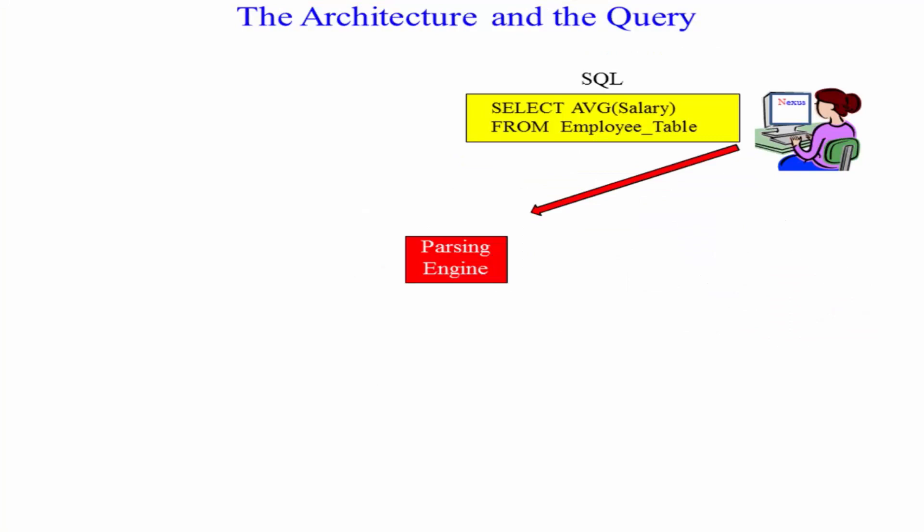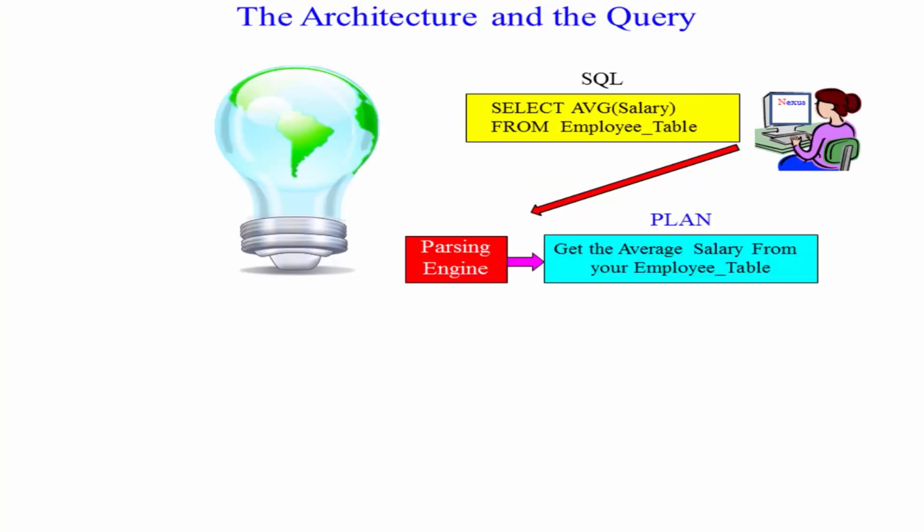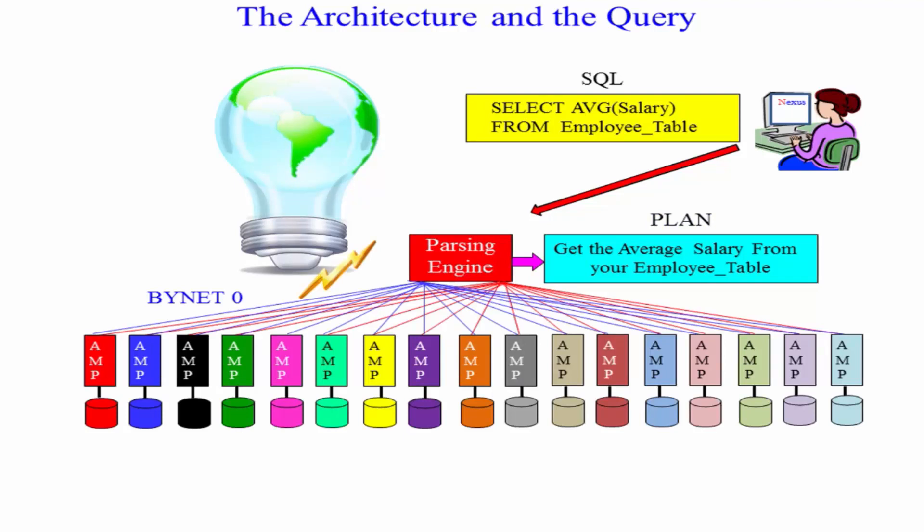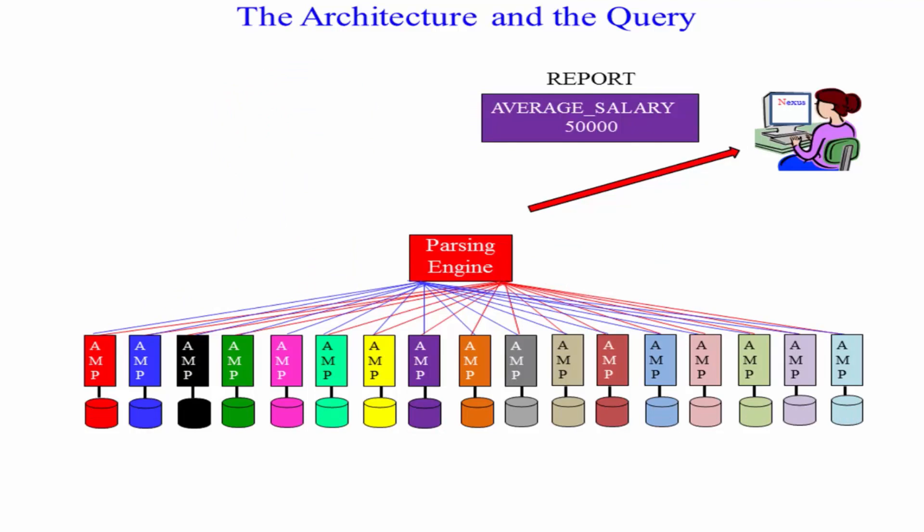It takes the SQL from the user, comes up with a plan, passes that plan over one of two Binets, Binet 0 or Binet 1. And then the AMPs get it simultaneously. They do their portion of the work. They return it to the parsing engine over the Binet and the parsing engine gives it back.